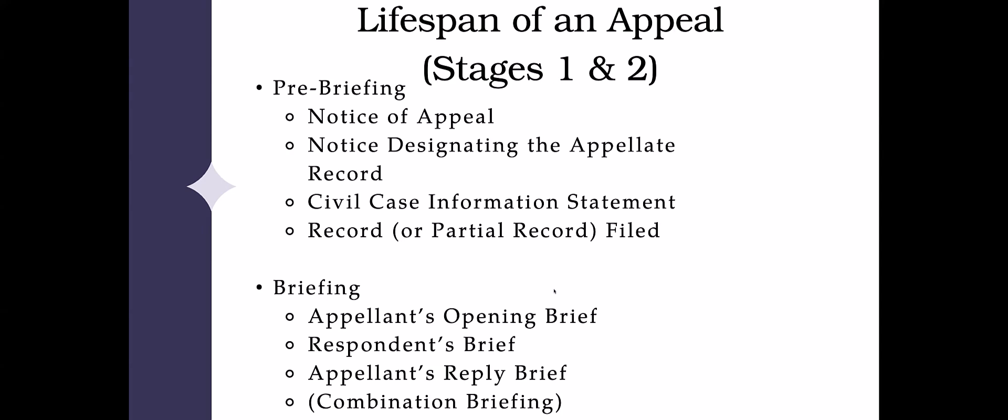The other main part of the record is the record of oral proceedings. In the notice designating the appellate record, you also have to tell the court what hearing dates, what courtroom, the nature of the proceedings, and whether you're including everything or just a portion. You don't have to designate exhibits, but you can include them in both the clerk's transcript and the appendix. They are automatically part of an appellate record, and after briefing, if requested by the court or if you want the court to review exhibits, you can transmit them directly.